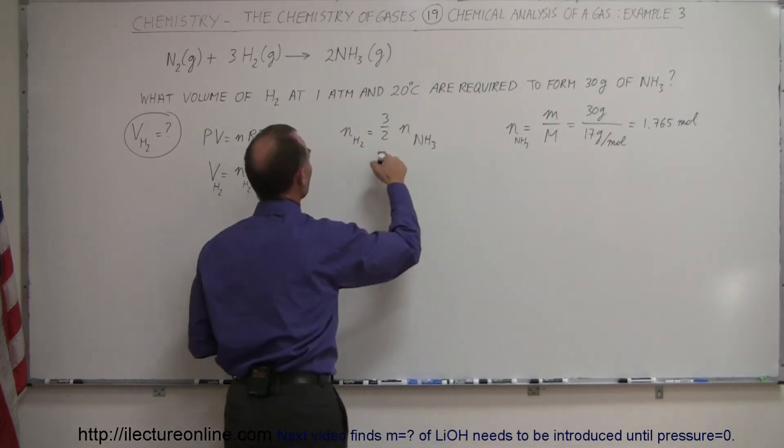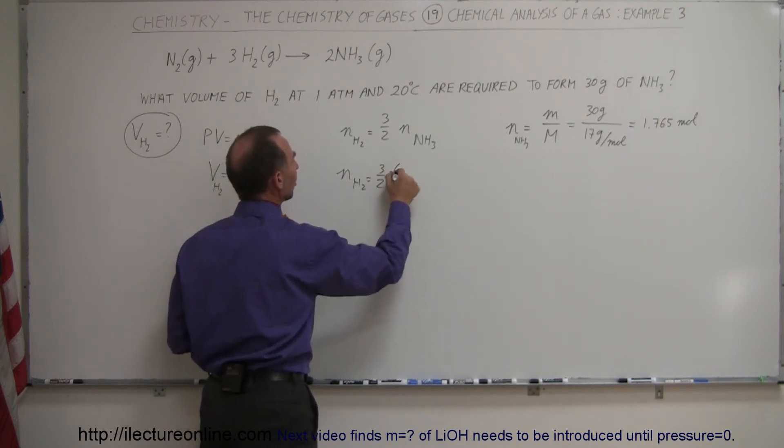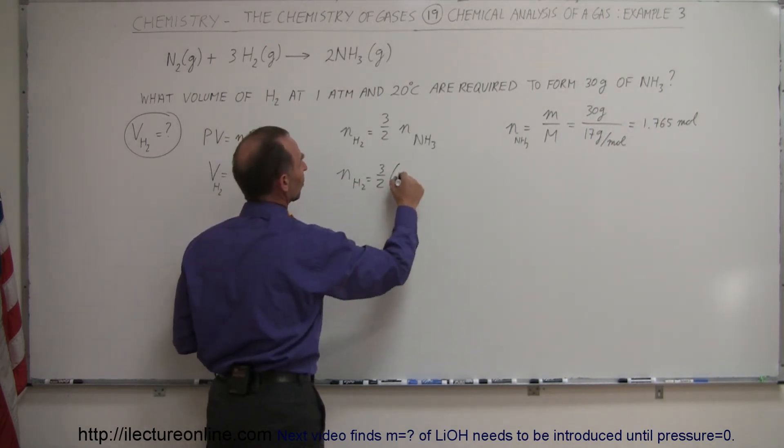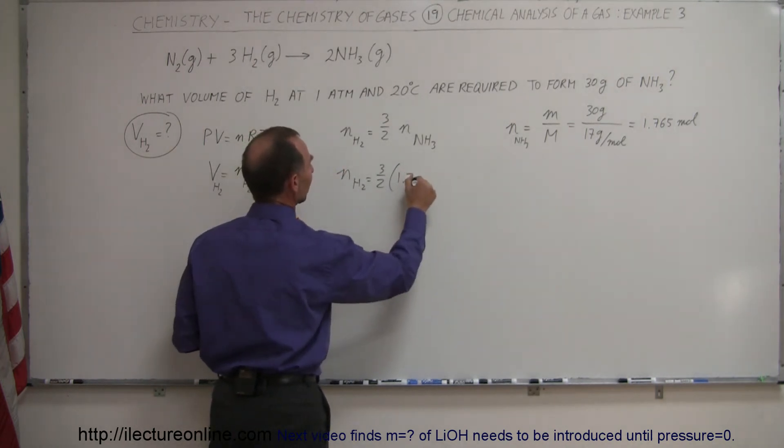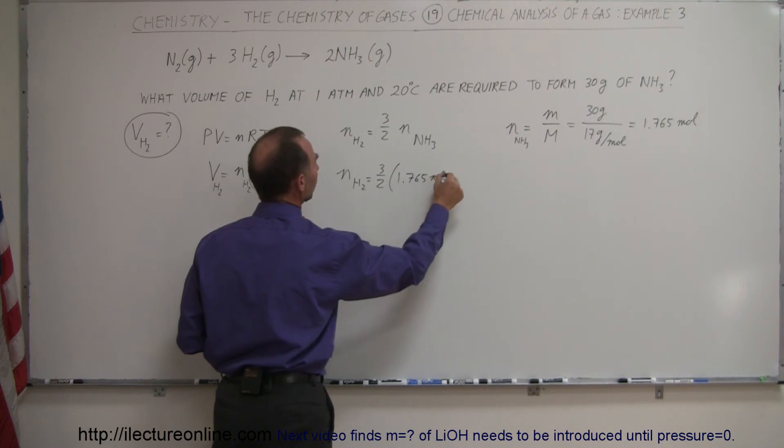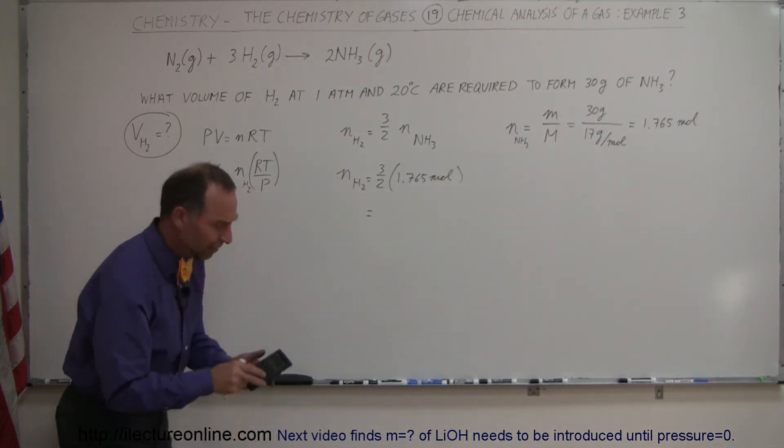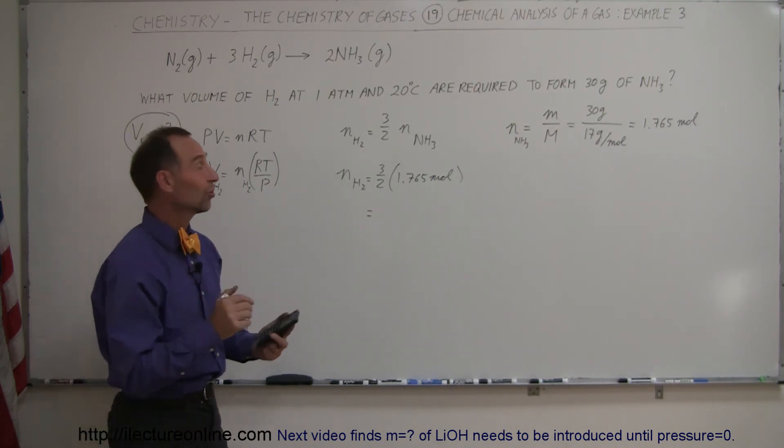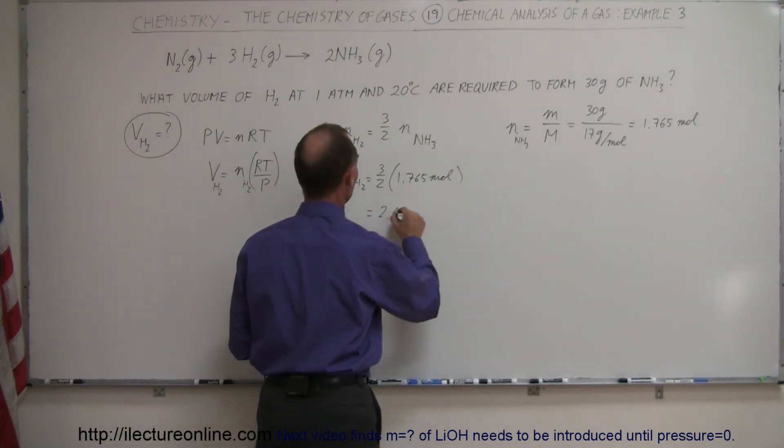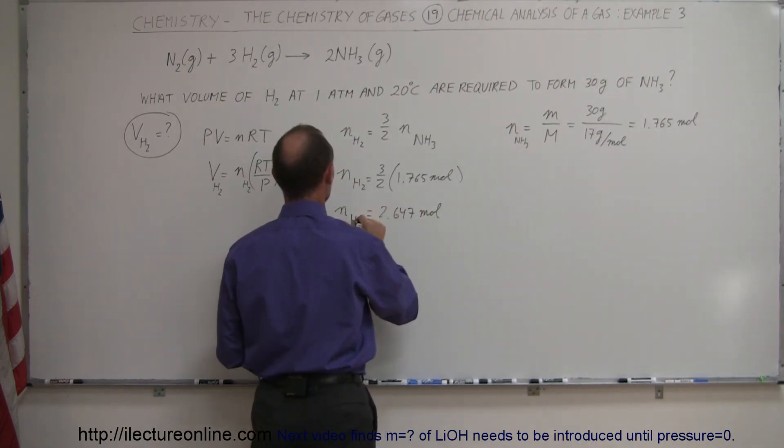Then we come over here and find the number of moles of hydrogen gas is equal to 3 halves the number of moles of ammonia gas which was 1.765 moles. And so we multiply that times 1.5. And we get 2.647. That's 2.647 moles of hydrogen gas.